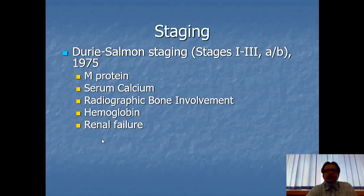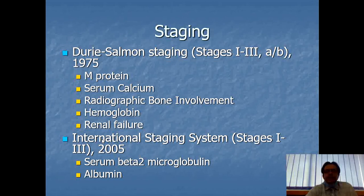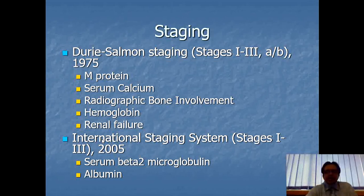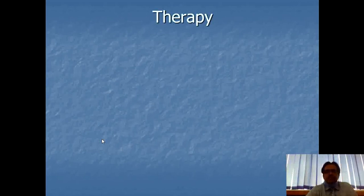For staging: the Durie-Salmon staging system (stages 1-2-3, subgroups A and B, from 1975) includes high M protein, high calcium, radiographic bone involvement, low hemoglobin, and renal failure. The International Staging System (stages 1-3, proposed in 2005) is based on high serum beta-2 microglobulin and low serum albumin.